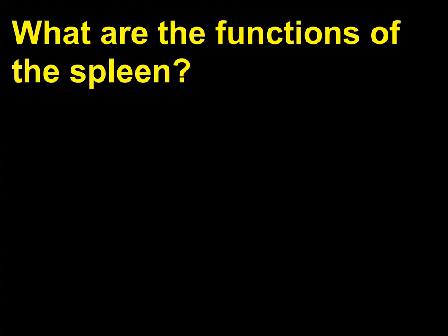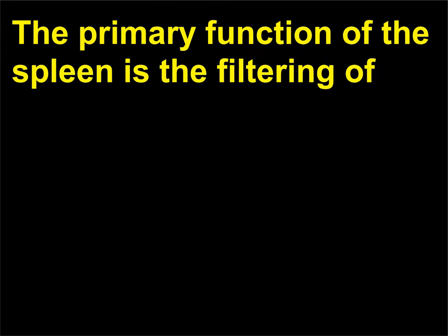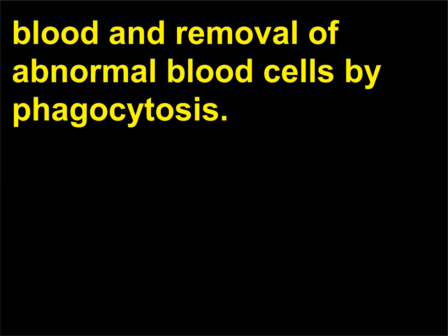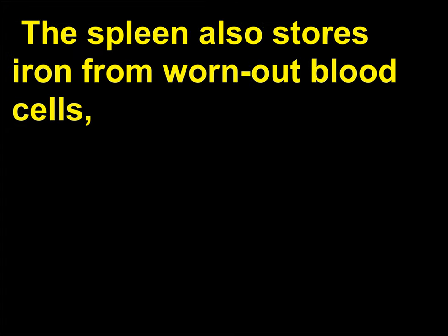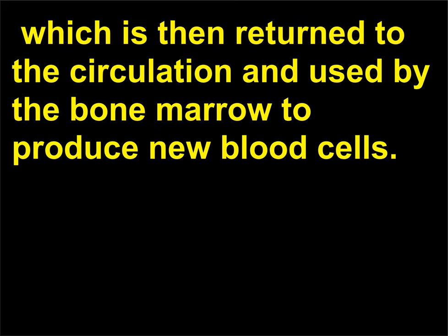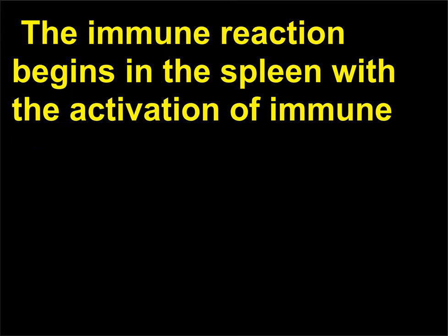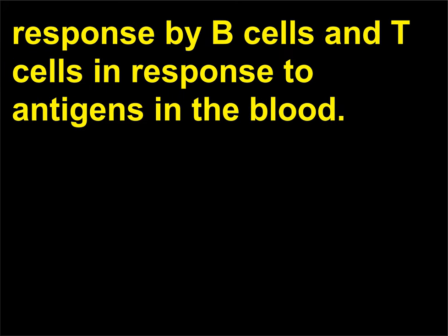What are the functions of the spleen? The primary function of the spleen is the filtering of blood and removal of abnormal blood cells by phagocytosis. The spleen also stores iron from worn-out blood cells, which is then returned to the circulation and used by the bone marrow to produce new blood cells. The immune reaction begins in the spleen with the activation of immune response by B cells and T cells in response to antigens in the blood.